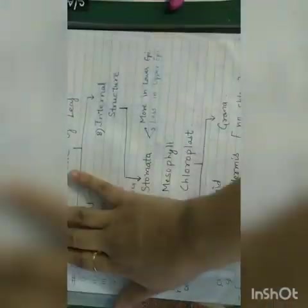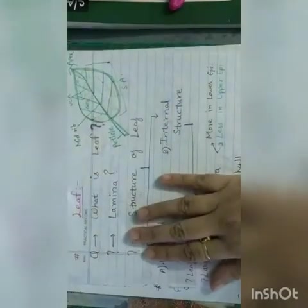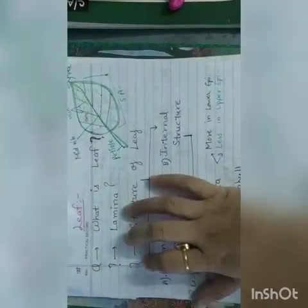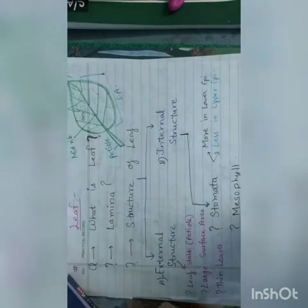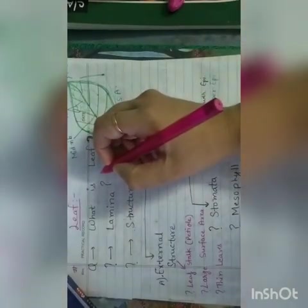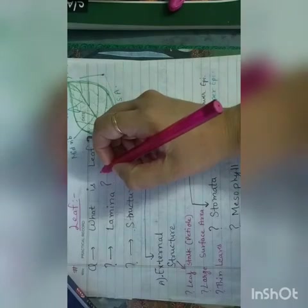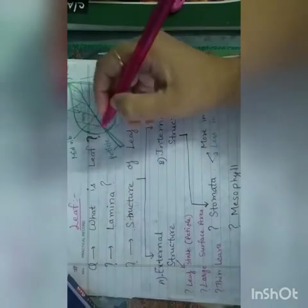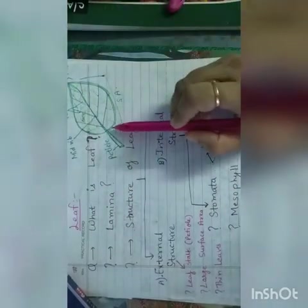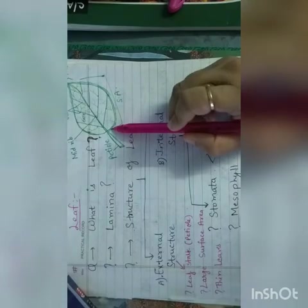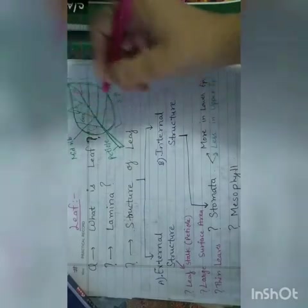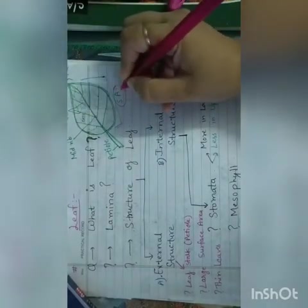Glucose breaks down and then they will get the energy from this glucose molecule. Now today we are going to learn about the leaf, the structure of leaf. First of all, the question arises: what is leaf? Leaves are flat and have large surface area.